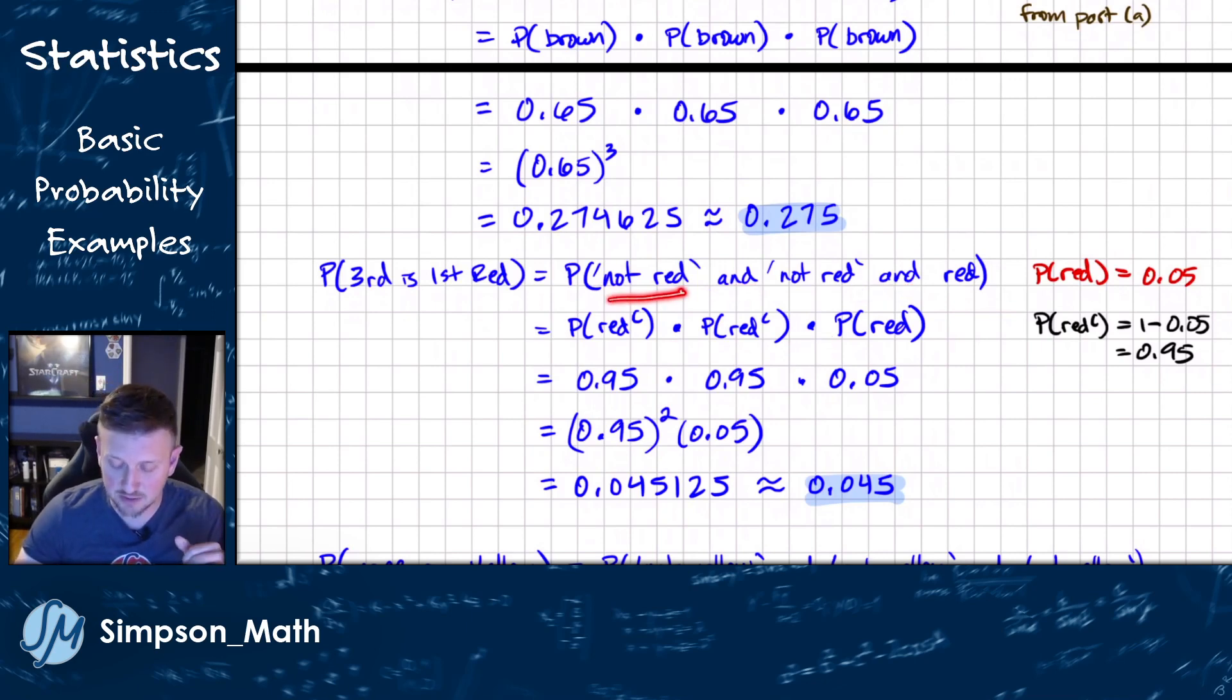So another way of saying not red is our red complement. So we're going to be multiplying probability of red complement times probability of red complement times probability of red. Our problem tells us that the probability of red is 5% or 0.05. So not red is going to be 95% or 0.95. So I'm going to replace these values and I get 0.95 squared because it's just two of them times 0.05. And this innate situation here is called a geometric distribution or situation. You don't really need to know that. It might show up in a later chapter. Multiply that out and we get 0.045.